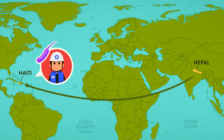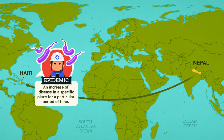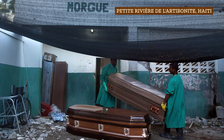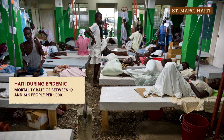These events led to an epidemic, or an increase of disease in a specific place for a particular period of time. This particular disease brought with it morbidity, which is another way of saying infected with a disease, and had a specific mortality rate, or the number of deaths in a given population over a set period of time. So in the case of the Haiti outbreak, we know that over the course of the epidemic an estimated 10,000 people died and over 800,000 were hospitalized, though definite numbers are hard to track because of the earthquake and already strained medical system. This outbreak is thought to have a mortality rate of between 19 and 34.5 people per 1,000. In comparison, Haiti's mortality rate just before the epidemic was 9 per 1,000.